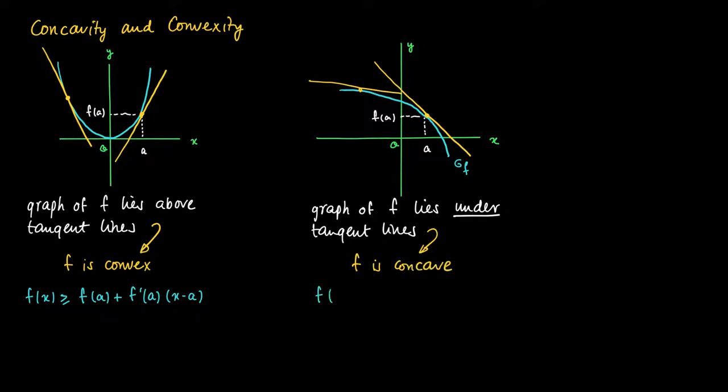So F is concave if the function value F(x) is smaller than its linear approximation. So F(x) is smaller or equal than F(A) plus F'(A) times (x minus A).